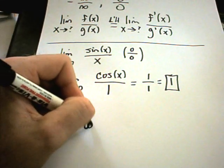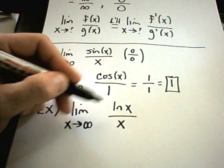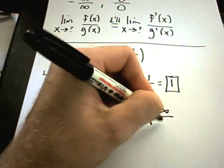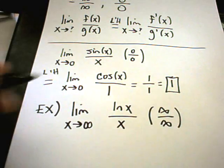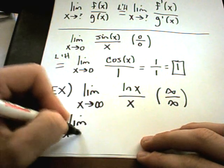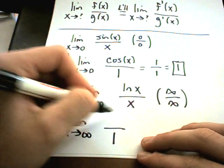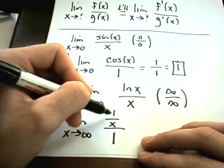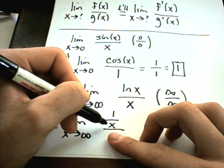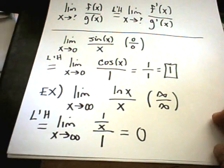Let's take the limit as x goes to infinity of ln(x) divided by x. As x goes to infinity, ln(x) goes to infinity, and so does x on the bottom, so we get infinity over infinity — which means we can use L'Hôpital's Rule. We get the limit as x approaches infinity of the derivative of ln(x), which is 1/x, divided by the derivative of x, which is one. So we have 1/x divided by 1, which is just 1/x. One over a large number approaches zero, so the answer is zero.